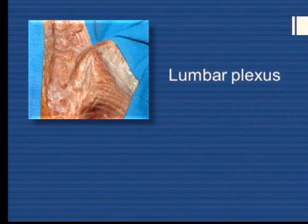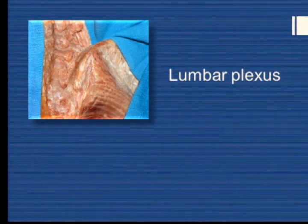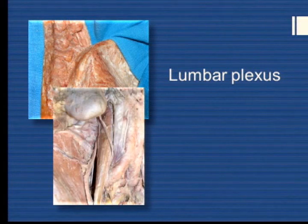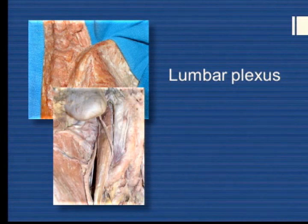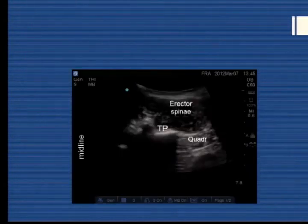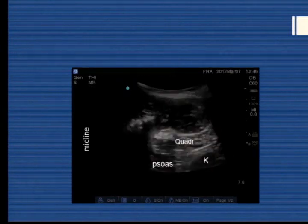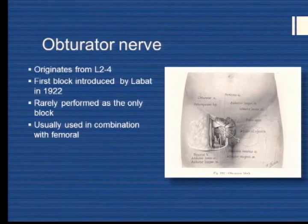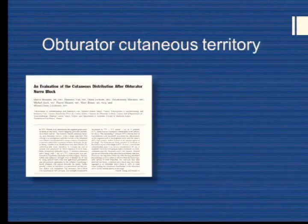This is the lumbar plexus seen from behind — transverse process of L4, femoral nerve, and psoas visible. Although the branches of the lumbar plexus pass through psoas at one point, at another point the lumbar plexus nerves are located between quadratus lumborum and psoas. This can be used as an injection target — quadratus here, psoas there — so you don't necessarily have to inject intrasoas. The last thing I'll mention is the obturator nerve.